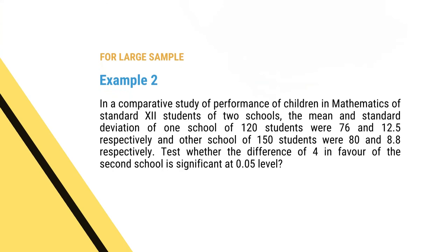This is the way we test whether there is a significant difference between two means at two different levels of significance. Let us take another example. In a comparative test of performance in mathematics of standard 12 students from two different schools, school 1 had 120 students with mean 76 and standard deviation 12.5, and school 2 had 150 students with mean 80 and standard deviation 8.8. Test whether the difference of 4 in favor of school 2 is significant at 0.05 level.